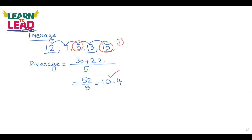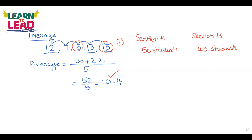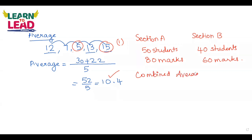Now if I take two sections — consider section A and section B. Section A has 50 students with an average mark of 80, and section B has 40 students with an average mark of 60. They are asking: what is the combined average?